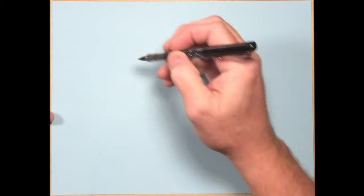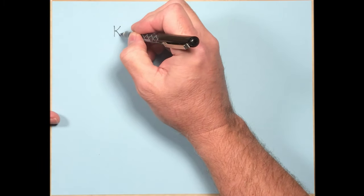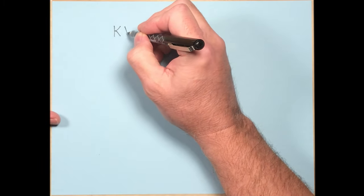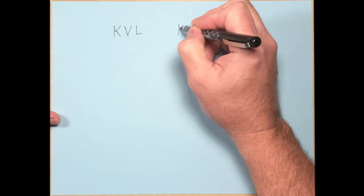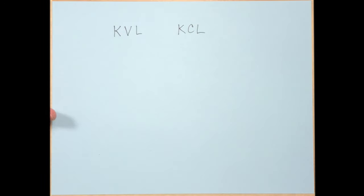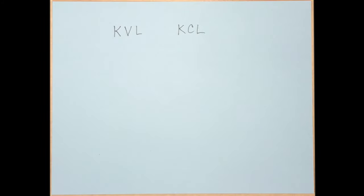We are heading towards a discussion of Kirchhoff's voltage law and Kirchhoff's current law, affectionately known as KVL and KCL. But before we get there, we need to define some more things: a node, a central node, a branch, a central branch, and a loop.